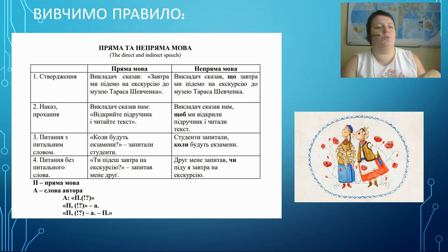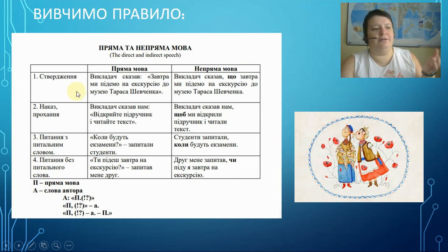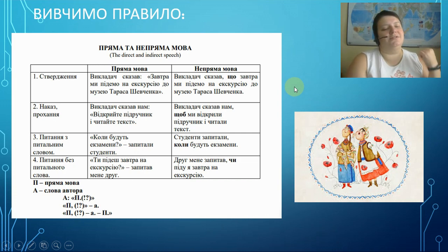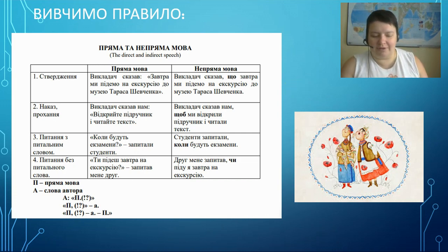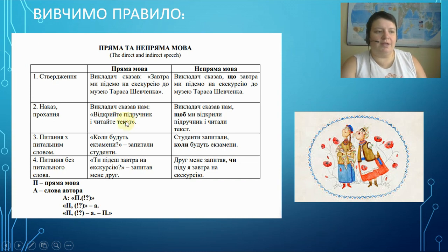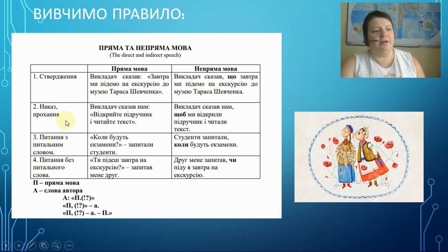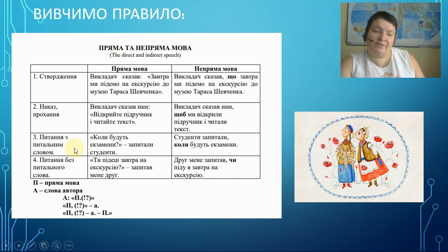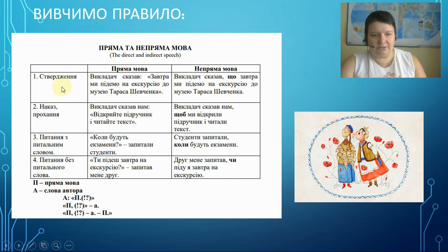You know direct speech — it's when the author says something and we have this direct speech. And indirect speech is when we just retell the sentence that the person said. In Ukrainian it's pretty easy. The only difference is between affirmative sentences and some request, order, or interactive type. So let's look through this.